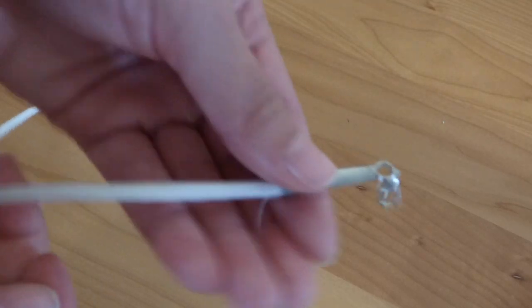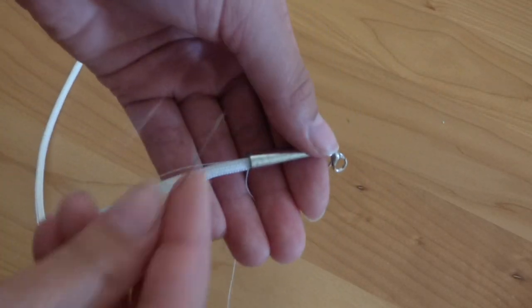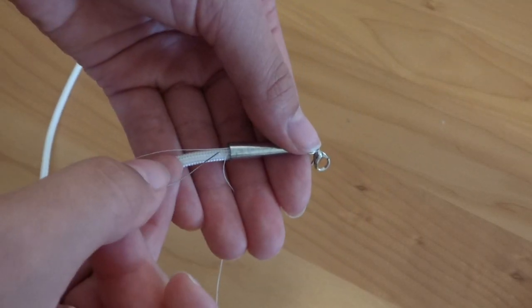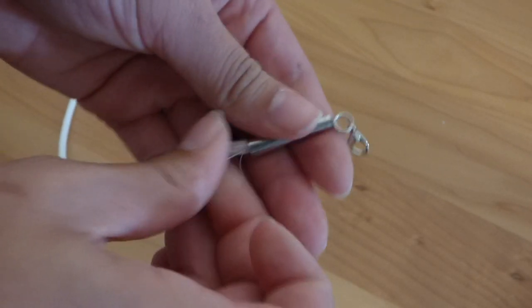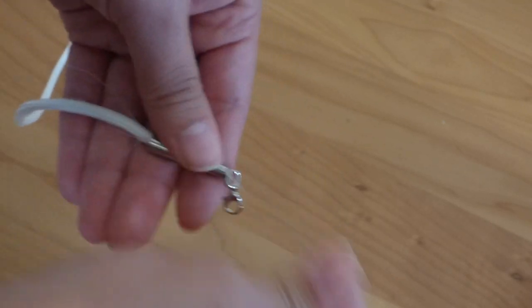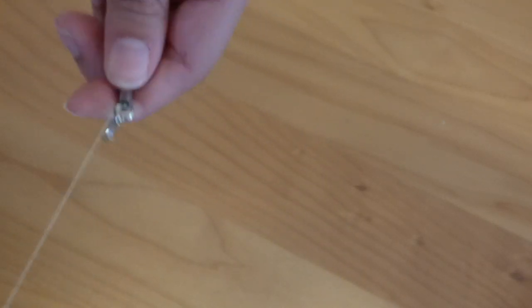Now this is the part where you're going to secure it a little more. So what you're going to do is take your thread and stick it through the paracord and push it back up through the cone. And then pull super taut.